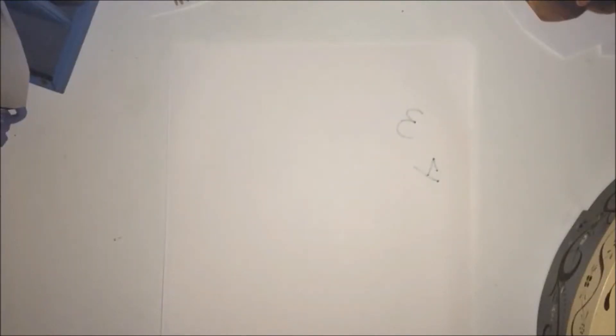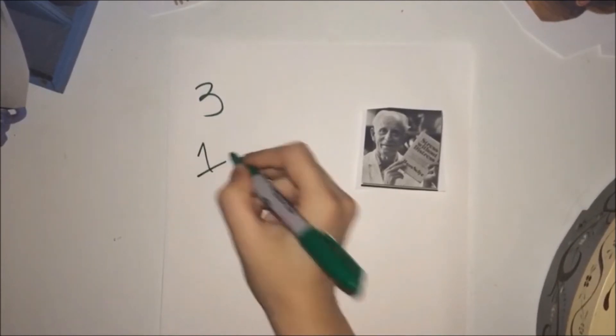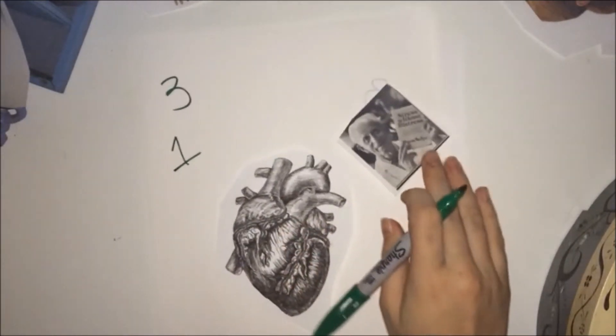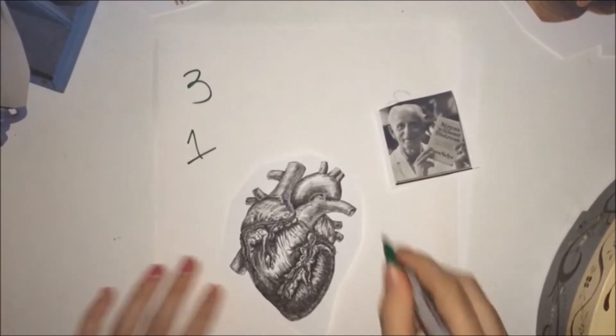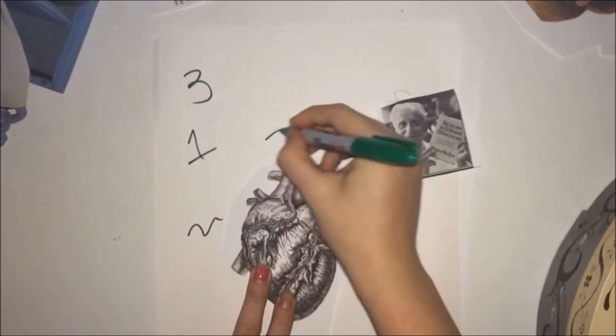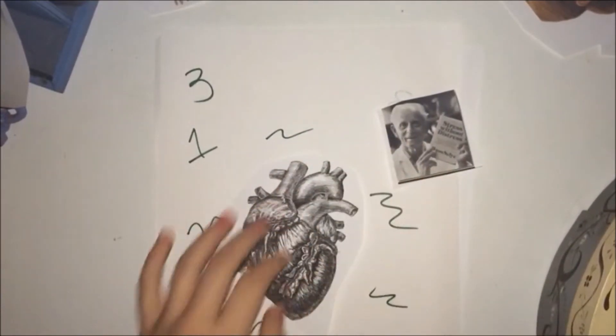Hans Seely developed the General Adaptive Syndrome, which is split up into three parts. First is the alarm reaction. Due to the sudden activation of the sympathetic nervous system, the heart begins to race, blood is directed to the skeletal muscles, and a feeling of faintness may occur.